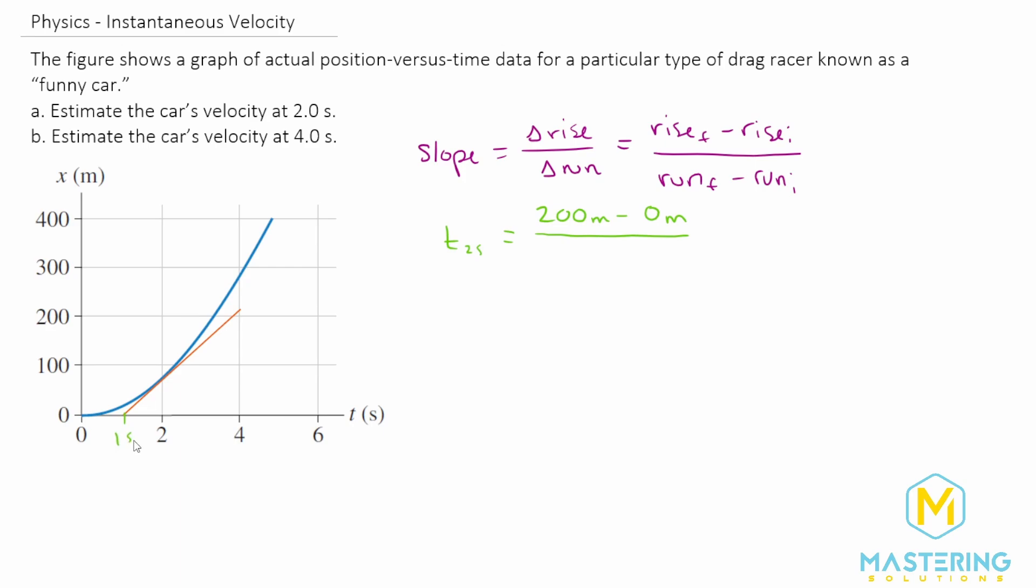which is about one second to four seconds. So we have final of four seconds minus one second, giving us 200 meters divided by three seconds.